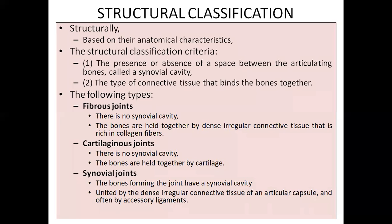In fibrous joints, you can see fibers - mainly collagen fibers - and they are made up of dense irregular connective tissue. Similarly, cartilaginous joints are made up of cartilage. Apart from those two, the third type is the synovial joint, which is present in many numbers in our body. You will get few examples for fibrous and cartilaginous, but there are so many examples for synovial joints.